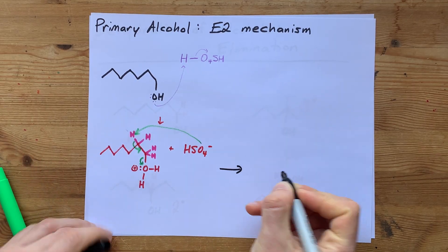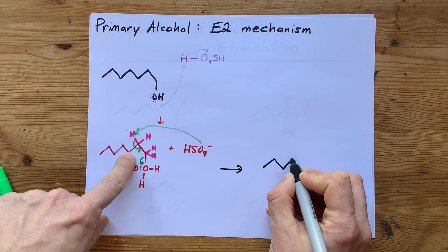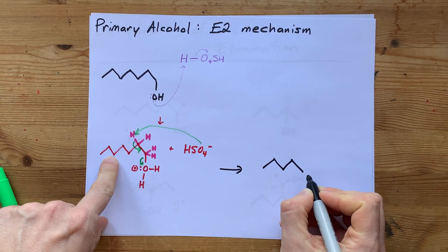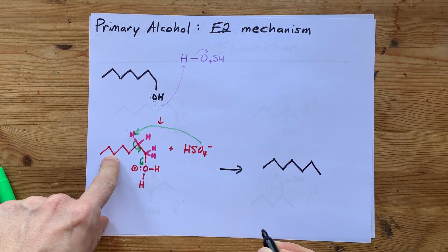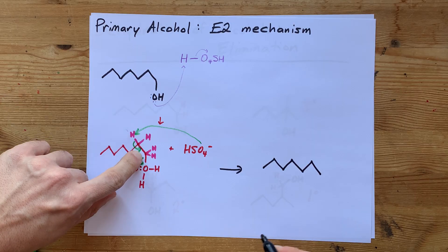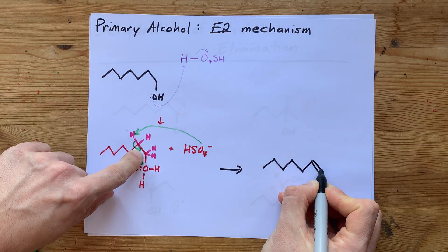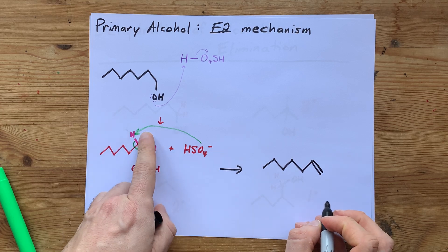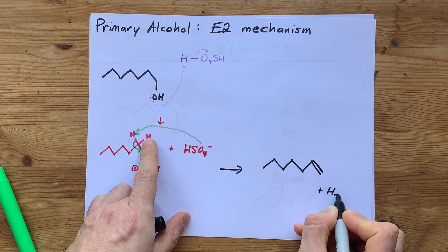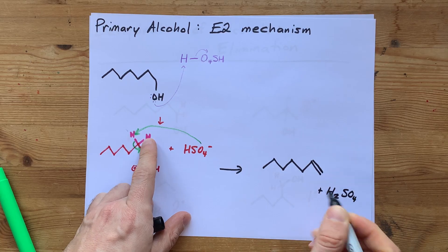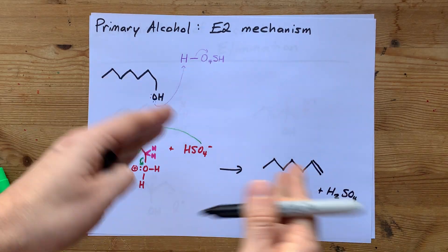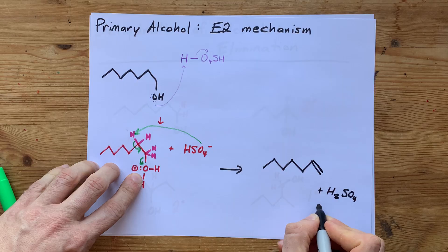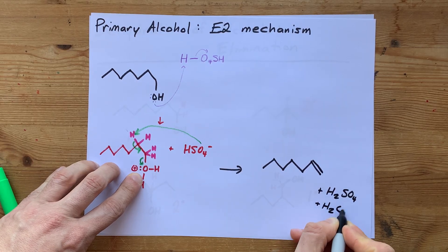In the end, our products here, I still have the long carbon chain. Except now I have a double bond at the end. The HSO4 minus took its extra H, so it's now H2SO4, which is actually how it started, so it's a catalyst. And you have H2O as a product.